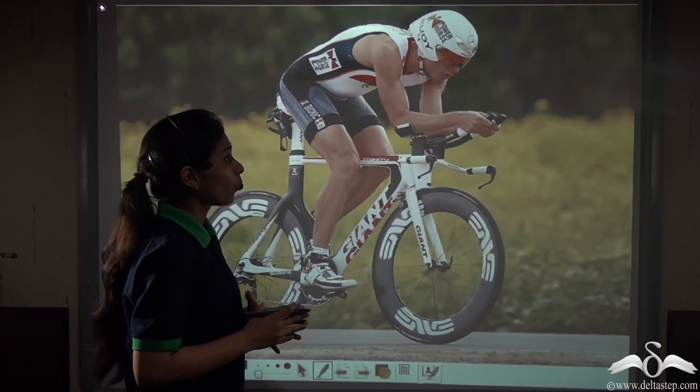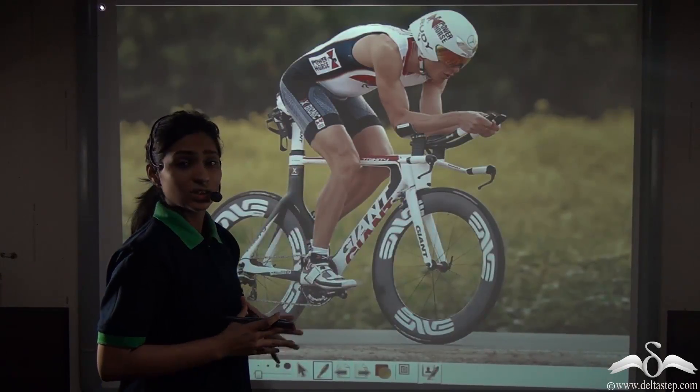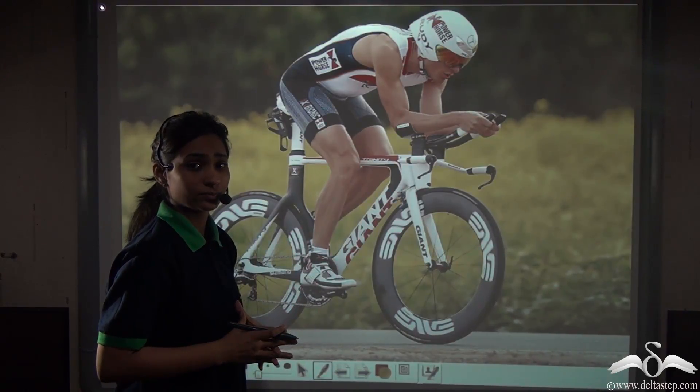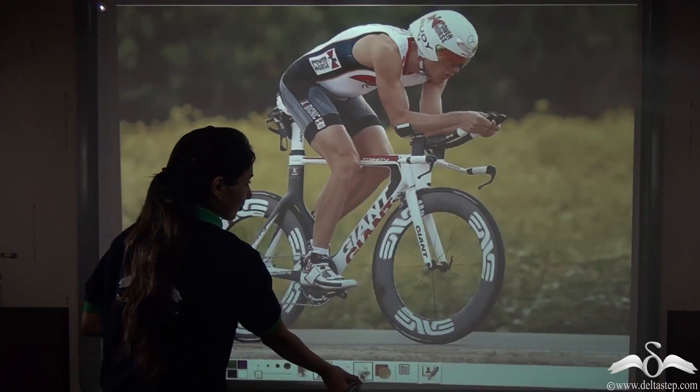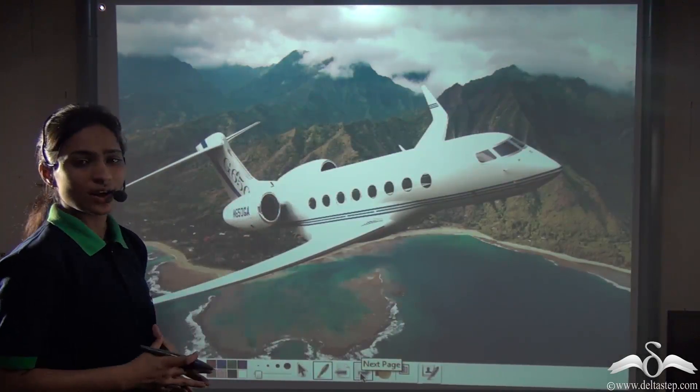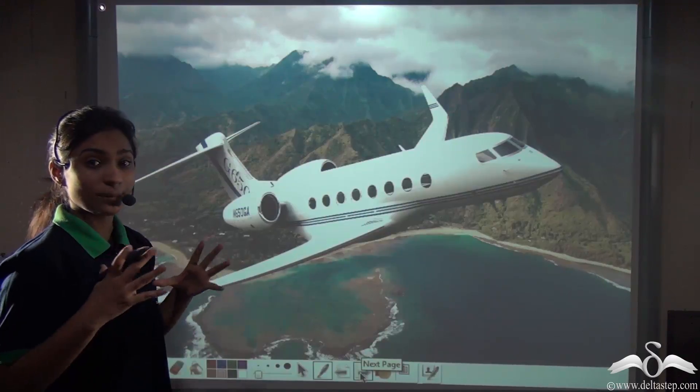Have you ever wondered why racing cyclists always crouch down low on their bicycles while racing, or why the shape of an airplane is such a streamlined shape?